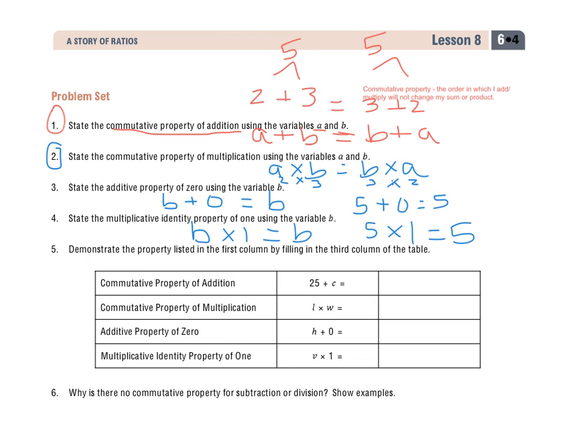So the properties listed below, we have the commutative property of addition. I want to show what this equals over here. It's going to equal C plus 25. I just switched the order of them. And then down here for these last two, you want to show what that equals. H plus 0 equals H. V times 1 equals V.